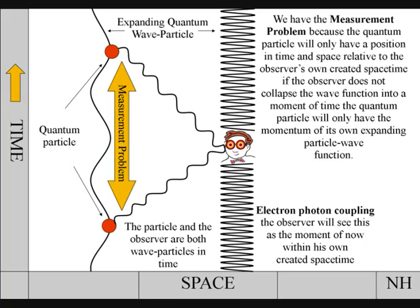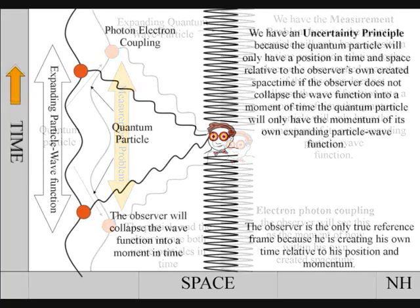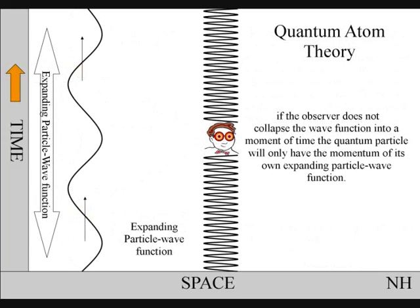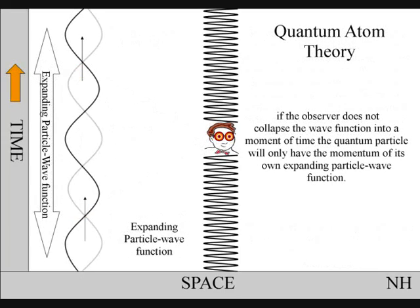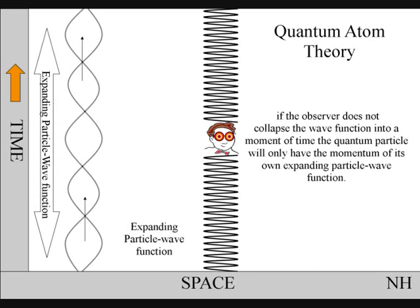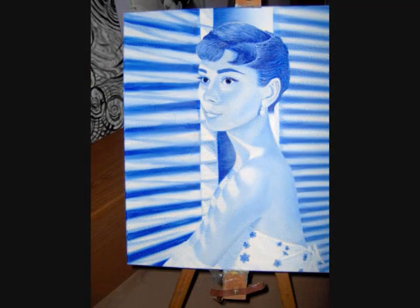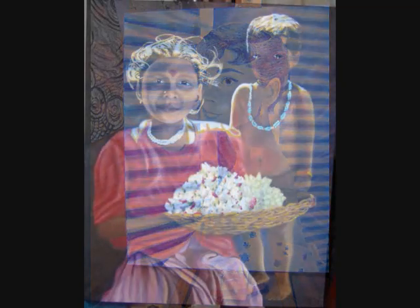We have an uncertainty principle because the quantum particle will only have a position in time and space if the wave-particle function collapses. If the observer does not collapse a wave-particle function into a moment of time, the quantum particle will only have the momentum of its own wave-particle function. At a fundamental quantum level, the observer is the observed, within his or her own created space-time.